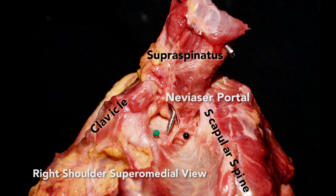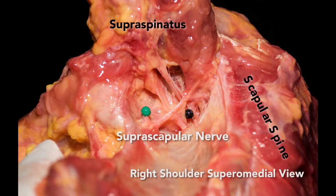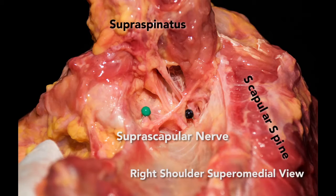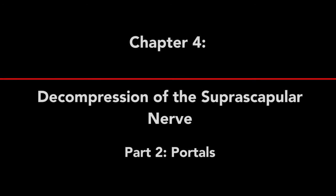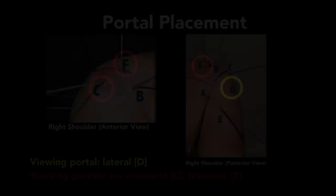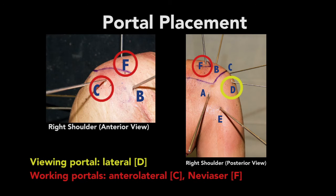At the spinoglenoid notch, the suprascapular nerve can be constricted by the inferior transverse scapular ligament or by a ganglion cyst. At the suprascapular notch, the suprascapular nerve faces entrapment by the transverse scapular ligament and the shape of the notch itself. A lateral viewing portal and two working portals — the Neviaser and anterolateral portals — are used for suprascapular nerve decompression.